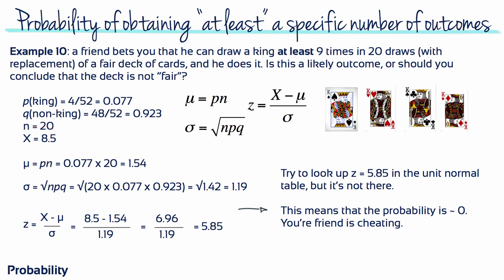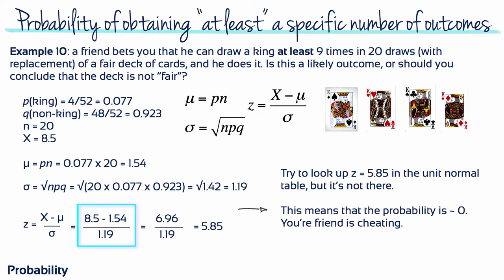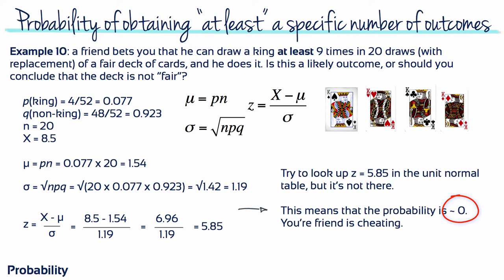We calculate the mean and standard deviation. The mean equals P times N, which is 0.077 times 20, equaling 1.54. The standard deviation is the square root of N times P times Q, which equals the square root of 1.42, which equals 1.19. Converting to a z-score: Z equals 8.5 minus 1.54 divided by 1.19, which equals 5.85. Looking up Z equals 5.85 in the unit normal table — it's not there. This means the probability is essentially 0. In other words, your friend is cheating.